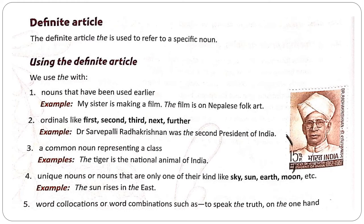The fifth use: word collocations or word combinations, such as 'to speak the truth' or 'on the one hand.' The following chart will help you understand the use of definite articles. THE is used before names of countries, nationalities or religious communities, mountain ranges, famous buildings, holy books and epics, families, and titles, awards and honors.